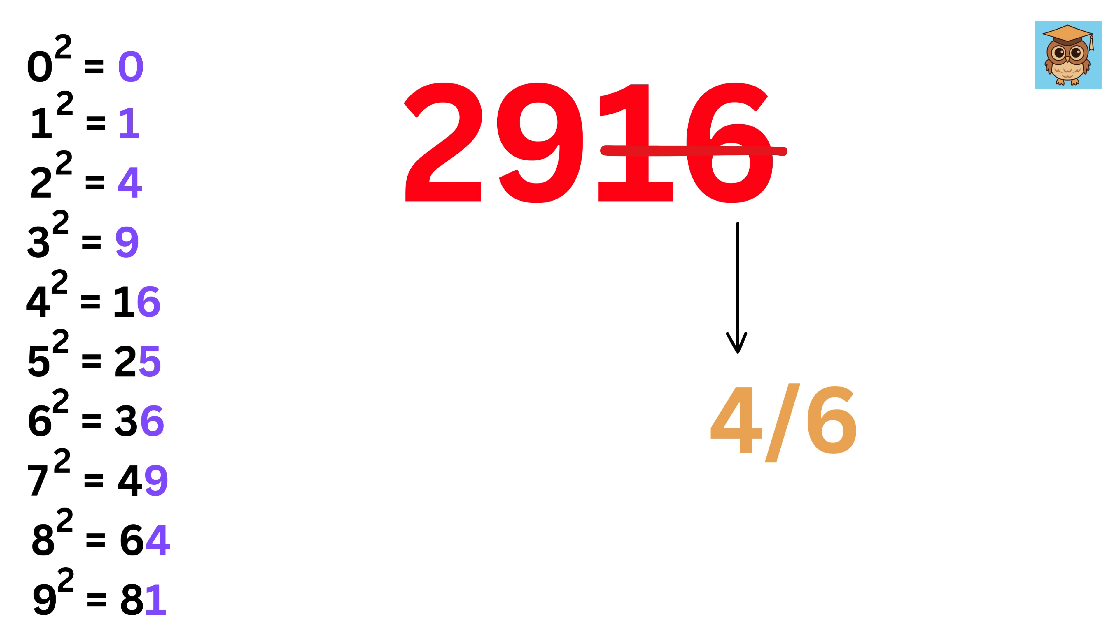Now, you know the drill. Cancel last 2 digits and find a square which is just below or equal to 29. It's 25, which is 5 square. So, write 5 here. So, our answer is either 54 or 56.